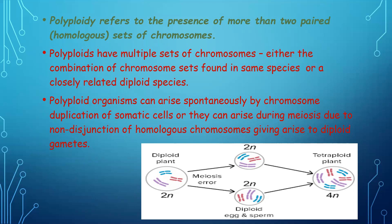Polyploid organisms can arise spontaneously by chromosome duplication in somatic cells, or they can arise during meiosis due to non-disjunction of homologous chromosomes, giving rise to diploid gametes. This picture shows how a tetraploid plant cell originates: a diploid plant cell undergoes meiosis, a meiosis error occurs, producing a diploid gamete, which on fertilization produces a tetraploid plant. This is one example of how polyploids are created.